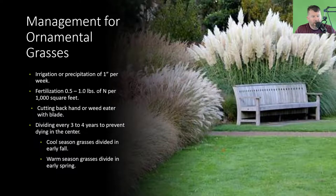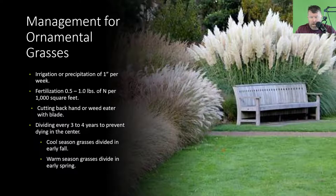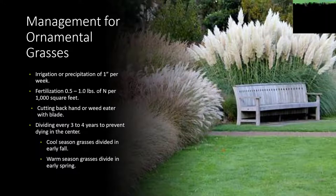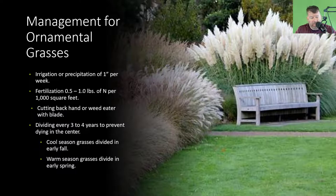I love the pink muhly grass — not only for the pink color but for the foliage itself. Even when the pink turns to a light tan, it's still pretty. Management for grasses: irrigation or precipitation at least one inch per week, fertilizing at half a pound to one pound of nitrogen per thousand square feet. Cut back by hand or weed eater blade — especially for pampas grass because it will cut your hands. Divide every three to four years to prevent dying in the center. Divide cool season grasses in early fall and warm season grasses in early spring.